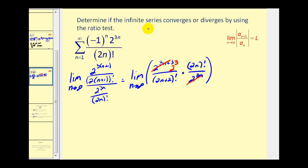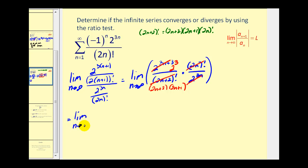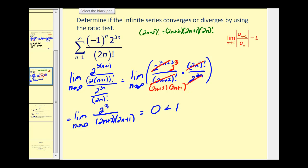Looking at two n plus two factorial: that expands as two n plus two times two n plus one times two n times two n minus one, and so on — which we can call two n factorial. When we simplify, the two n factorial cancels, leaving only two n plus two and two n plus one in the denominator. So our expression simplifies to two to the third in the numerator, and two n plus two times two n plus one in the denominator. As n approaches infinity, the numerator is fixed at eight while the denominator increases without bound, so this limit equals zero, which is less than one. Therefore, by the ratio test, the given series converges.